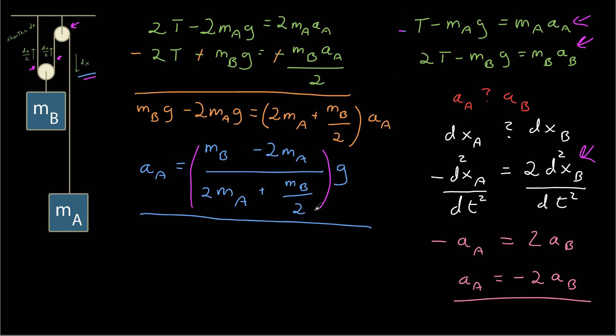Finally, we check to see if this makes sense. Both masses are in the denominator, so if either goes up, the acceleration goes down. If mass B is more than twice mass A, the acceleration of A will be positive, meaning A goes up. That means mass B must be more than twice mass A for mass B to fall and lift mass A. This makes sense because the pulley is on mass B, giving mass A leverage, so mass B must have twice the mass to fall and lift mass A.